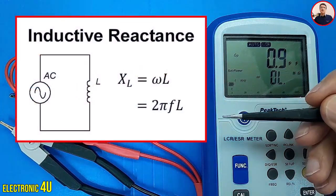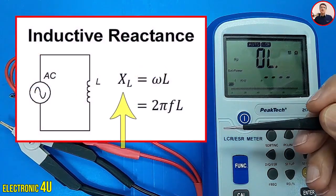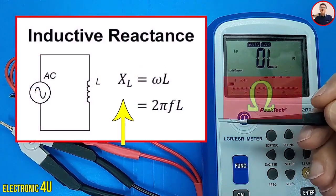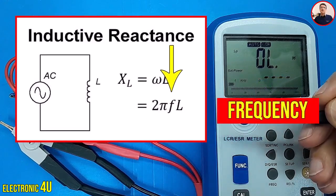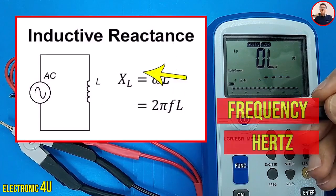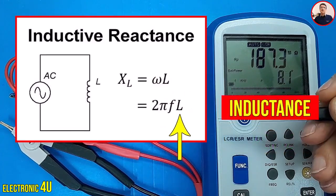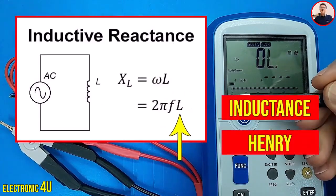This is the reactance formula. XL is reactance and its unit is Ohm. F is the frequency of the AC signal and its unit is Hertz. L is the inductance of the inductor and its unit is the Henry.